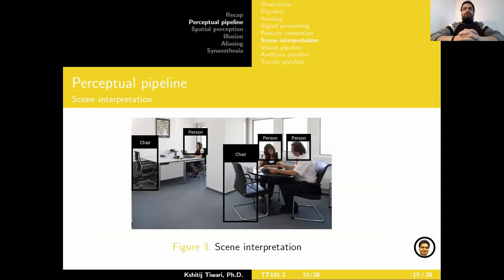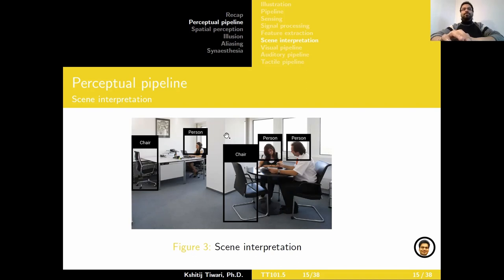We've looked into getting raw sensory data, sanitization via signal processing, extracting features and understanding the data, and the last step of the perceptual pipeline is to try and interpret what's in the scene — basically the environment the robot is in. Some examples of scene interpretation could be semantic understanding, where the robot tries to label what's around it. Imagine a snapshot through your camera: it's trying to understand there's a chair, there's a person, there's another person, there's another chair. You could incrementally build on this — if there are chairs, tables, and more than one person, maybe you're in an office room because of the office furniture. This is all semantic understanding.